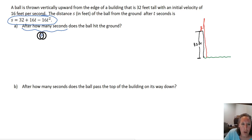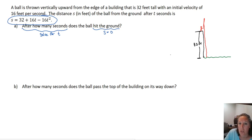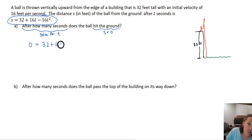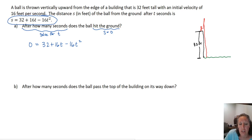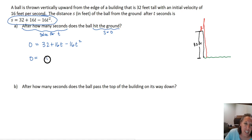"How many seconds" means we're going to solve for t. When the ball hits the ground, the distance between the ball and the ground is zero, so S equals zero. We're going to plug in S equals zero and solve for t. I notice 16 and 32 have a lot of common factors, so I'm going to factor out the greatest common factor and rearrange in the same step. I like my leading t squared coefficient to be positive, so between 32, 16t, and negative 16t squared, the GCF is 16, but I'll factor out a negative 16.